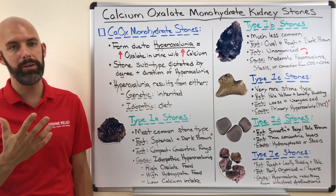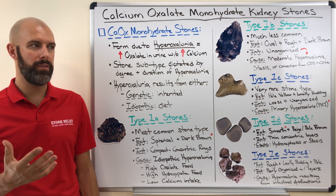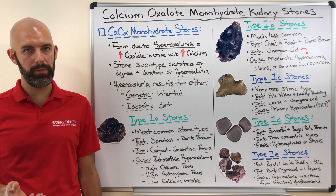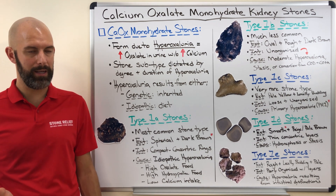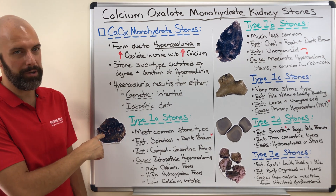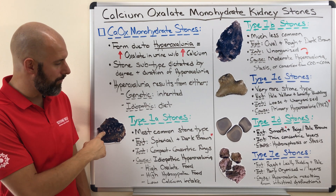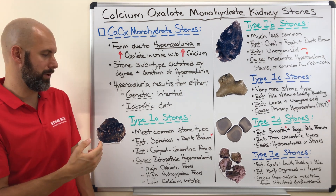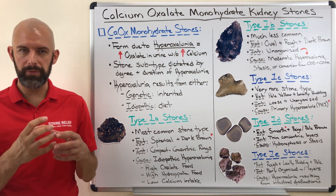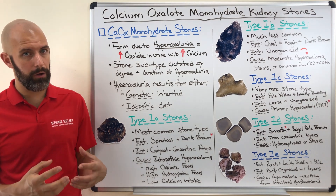To kick things off, we're going to talk about the most prevalent of the calcium oxalate monohydrate stone types — the type 1A stone — which is what most people in the US get when they get a kidney stone. Looking at the pictures, they're terribly ugly little things. What defines the type 1A stone is a more round, spherical shape, and it's going to be typically dark brown in color.